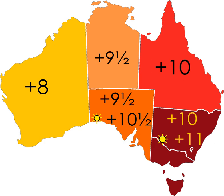The Indian Pacific train has its own time zone, a so-called train time, when travelling between Kalgoorlie, Western Australia and Port Augusta, South Australia, which was at UTC+9 hours during November 2005 when DST was observed in the eastern and southern states.